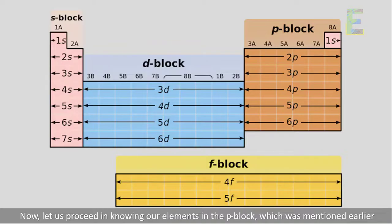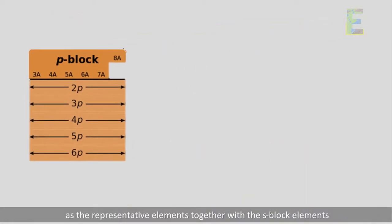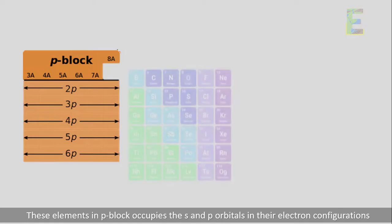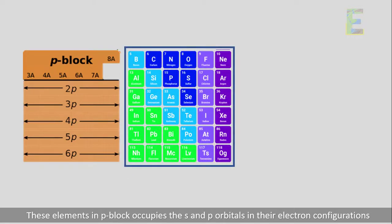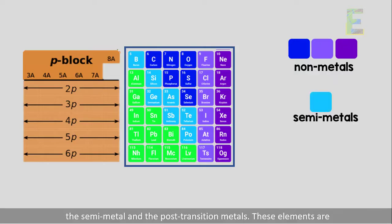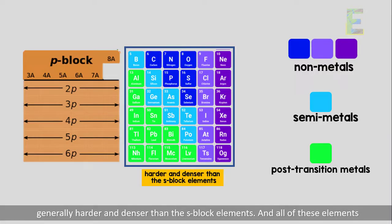Let us now proceed to the elements in the P block, which were mentioned earlier as representative elements together with the S block elements. These P block elements occupy the S and P orbitals in their electron configurations. They consist of Groups 3A to 8A, except helium. P block elements consist of all non-metals except for hydrogen and helium, the semi-metals, and the post-transition metals. These elements are generally harder and denser than the S block elements.